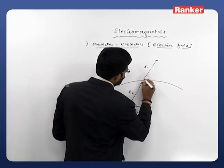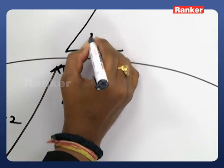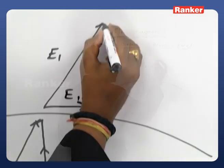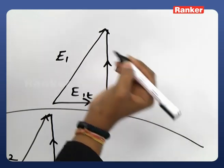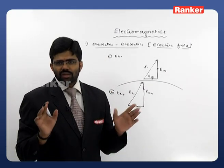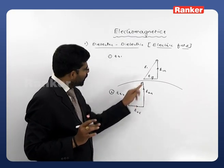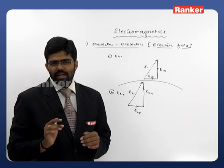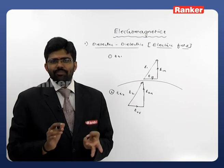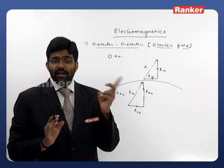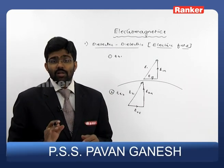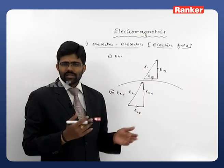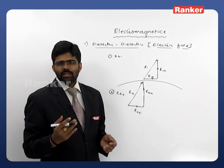Similarly, we decompose E1 as tangential component E1t and normal component E1n. So we are decomposing the electric field in both mediums as tangential and normal components. The same principle is applicable for all remaining parameters — magnetic field, electric flux density, and magnetic flux density will all be decomposed as tangential and normal. Among these four components, we need to observe which ones exist, which do not, and which are continuous or discontinuous at the boundary.